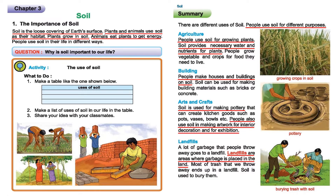The next use is building. People make houses and buildings on soil. Soil can be used for making building materials such as bricks or concrete. If you look around you, you can see a lot of buildings and structures made on top of the soil. These buildings are made with bricks and concrete, and we know that bricks and concrete are made by soil as well. That's why the building sector is fully dependent on soil.